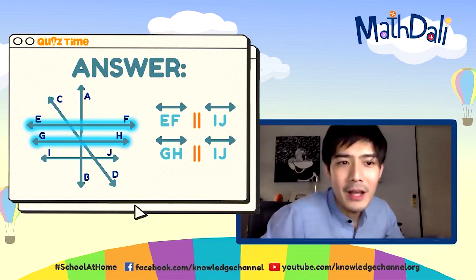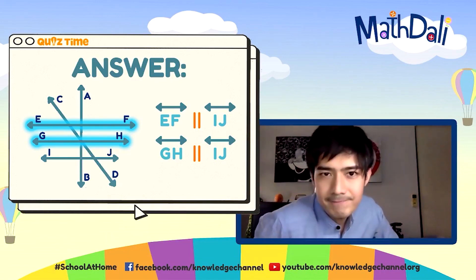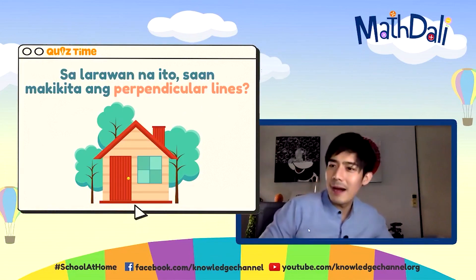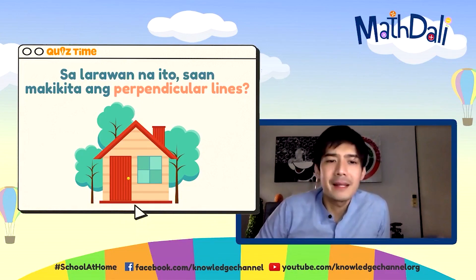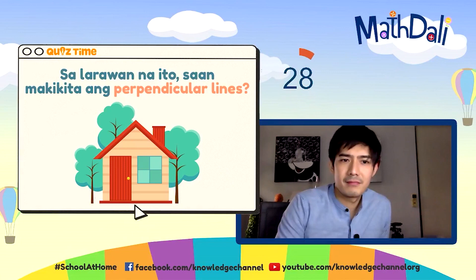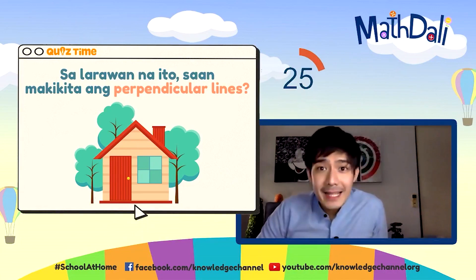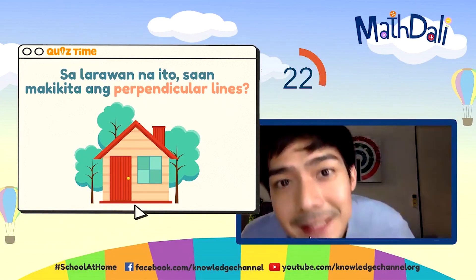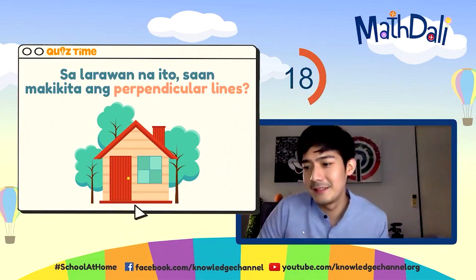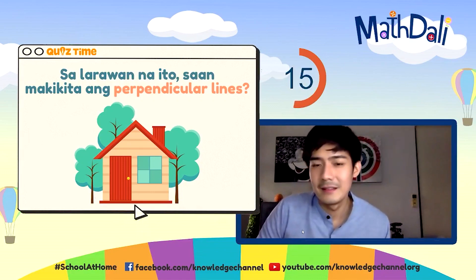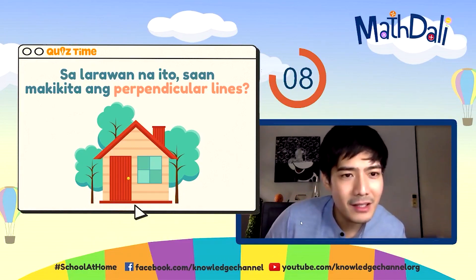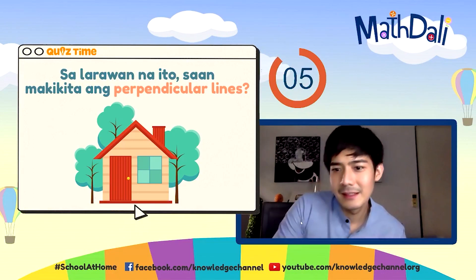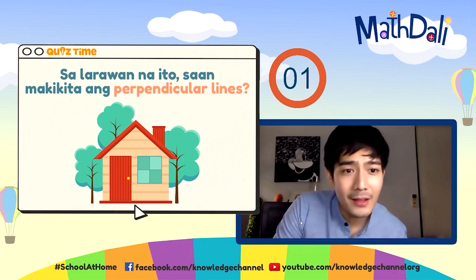I think we can move on with another item. Sa larawan na ito, I think ito yung bahay ng kuya. Saan magkita ang perpendicular lines. 30 seconds. Go! Perpendicular lines, guys, ha? Hindi parallel lines, ha? Ano nga ba? Tignan nga natin perpendicular. 3, 2, and 1. Time is up.